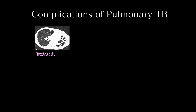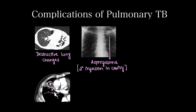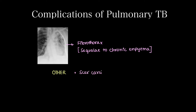Complications of pulmonary tuberculosis include destructive changes in lung parenchyma, secondary aspergillosis causing aspergilloma or fungal ball forming in a previously existing cavity, and Rasmussen aneurysm. Pleural thickening can lead to fibrothorax as a sequelae to chronic empyema. Other complications are scar carcinoma, pericarditis, and mediastinal fibrosis.